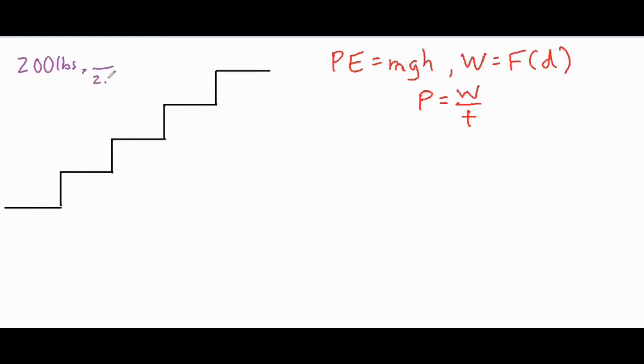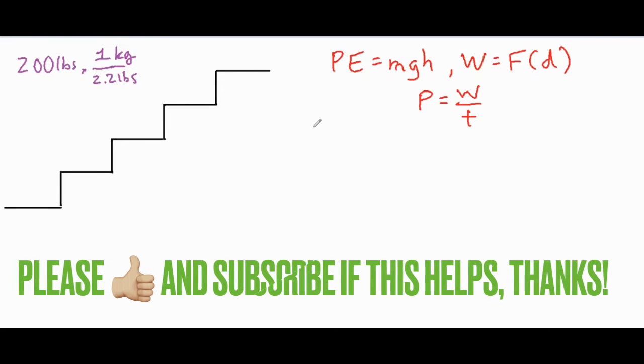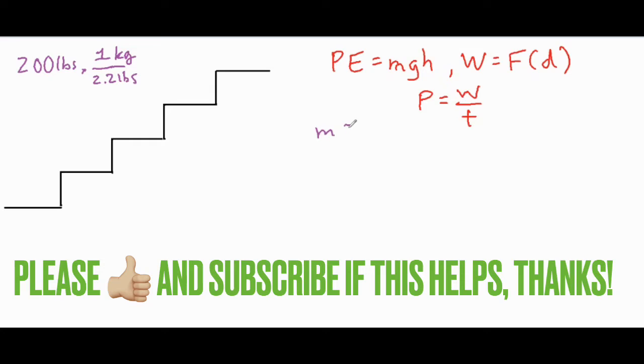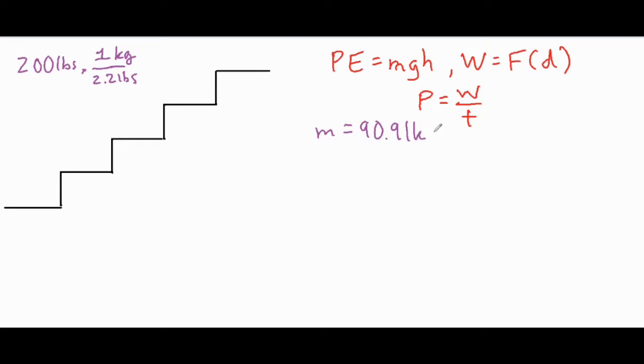We want to do some conversions with that. We know that there are 2.2 pounds in one kilogram, so if you take 200 divided by 2.2 you can get your mass and that mass would come out to 90.91 kilograms.